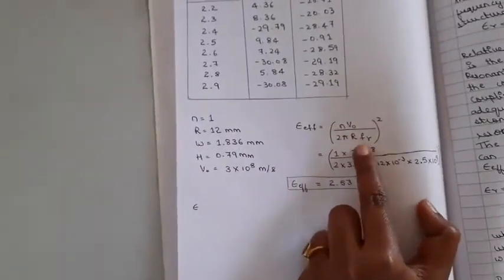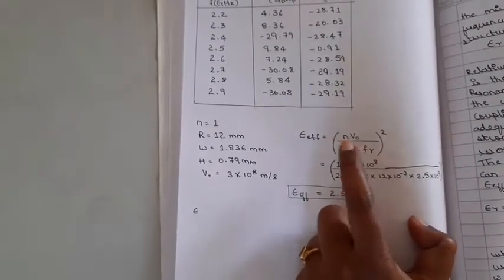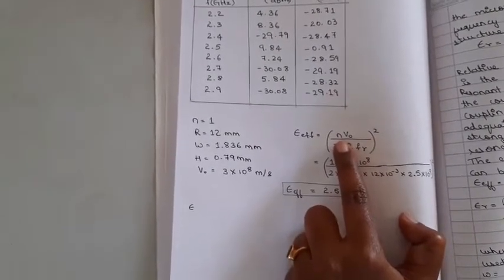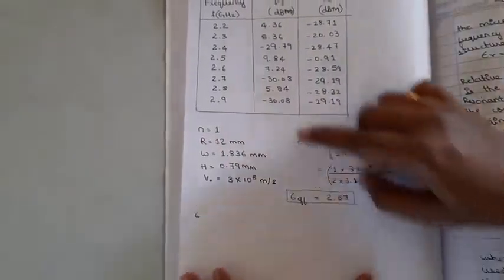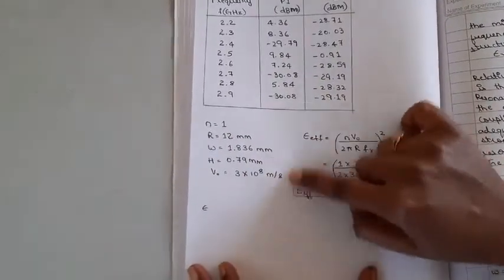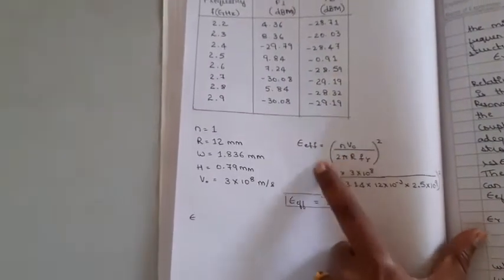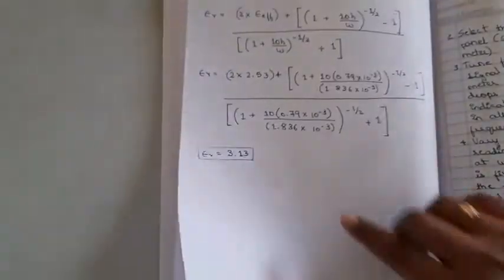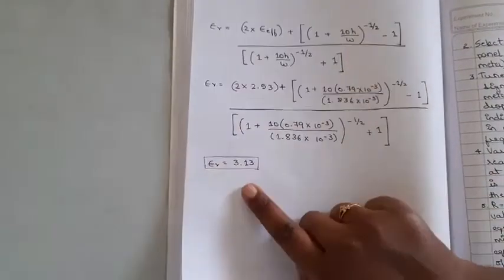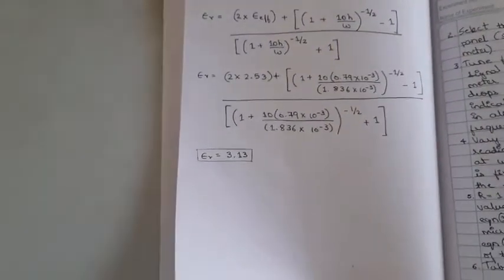How to find this effective permittivity? We have the equation: epsilon_r_effective equals (N times V_0 divided by 2 pi r F_r) squared. Here F_r represents the resonant frequency, V_0 represents the speed of light, and N represents the mode number. Since we are using air medium, the value of N is 1. If we know the resonant frequency, we can find the effective permittivity, and substituting that into the epsilon_r equation, we can obtain the dielectric constant of the duroid substrate.